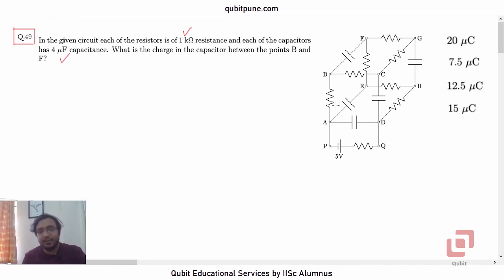So where are the points B and F here? This is B and this is F. So we would like to know how much charge there exists on either of the plates of this particular capacitor. Let me highlight it in blue color now. This one.